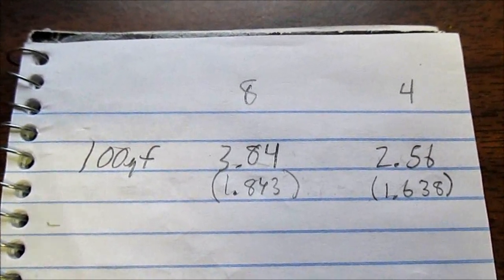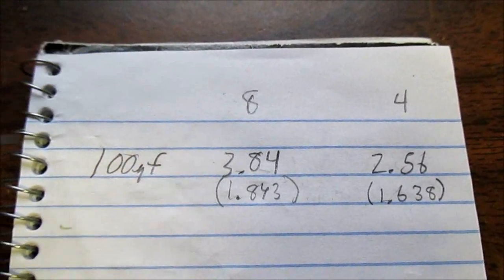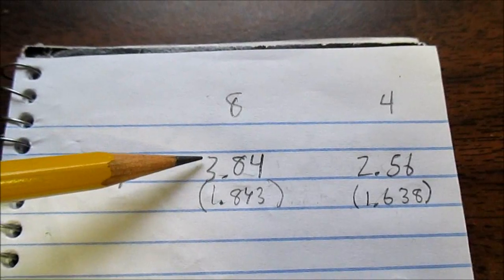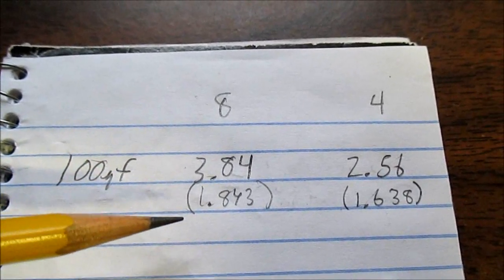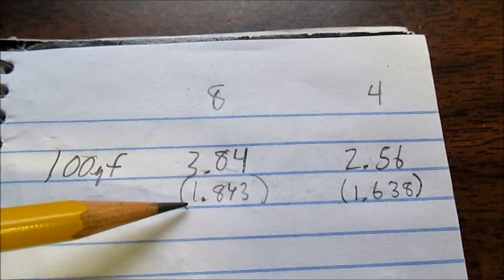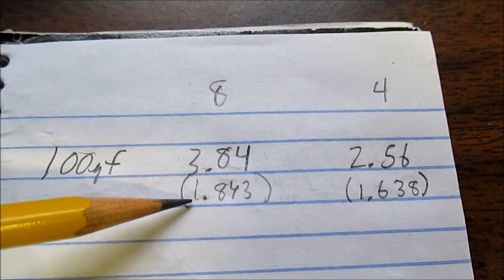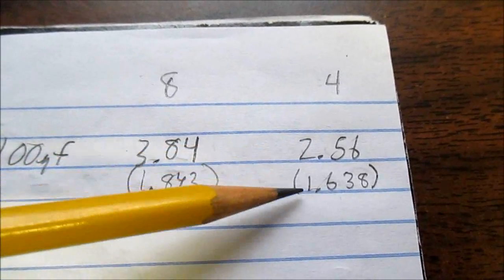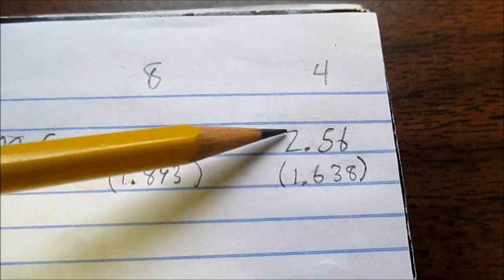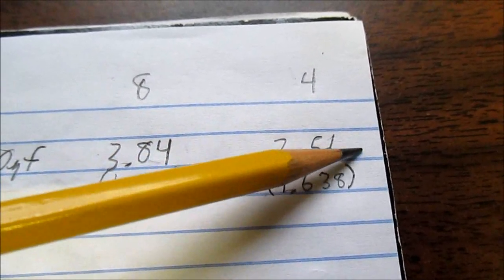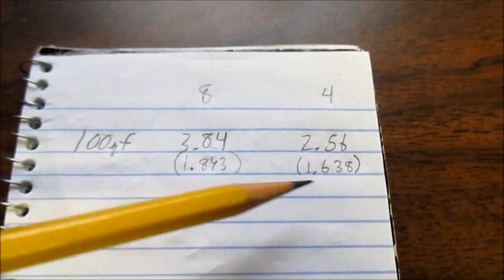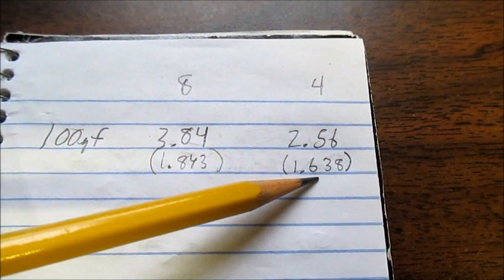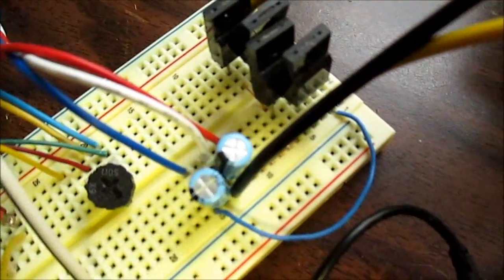Well, I went ahead and fine-tuned my measurements. And with the 8 ohm load using the 100 microfarad capacitors, it's getting an output voltage of 3.84 volts RMS. And with that 8 ohm load, that's 1.843 watts. I went ahead and did the 4 ohm load and it's actually a bit less. Got a 2.56 RMS volt output and that came out to 1.638 watts. Even less than the 8 ohm load. Normally, you'd think you'd have a stronger output with the 4 ohm load. But not with those little bitty capacitors.